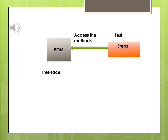Here is the structure: we have test steps and we have page object model. In a practical scenario, the steps of your test will access the methods using page object model. Page object model is nothing but an interface to access the methods. All those test steps will use page object model to access the methods of that particular web page.